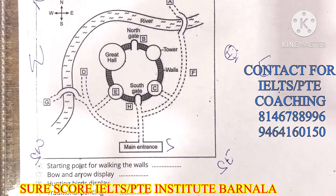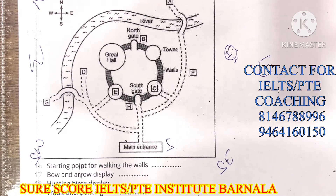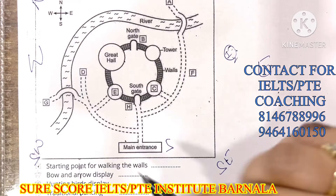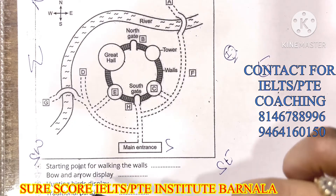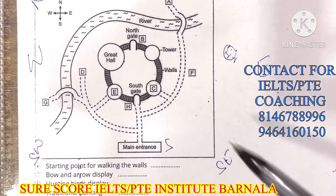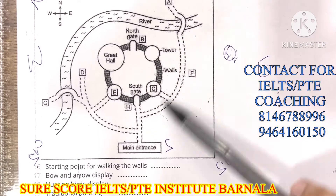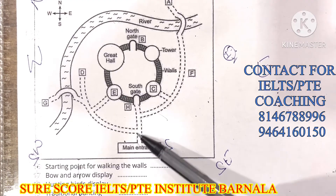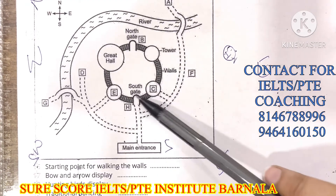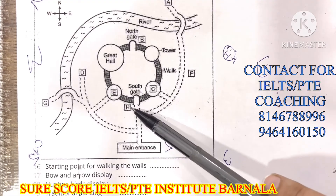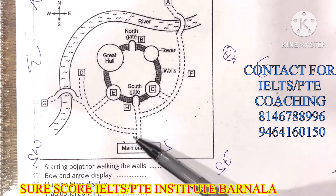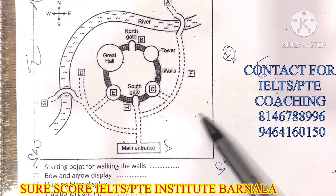We have to check questions 16 to 20. The key items to locate are: starting point, bow and arrow display, hunting birds, traditional dancing, and the shop. Quickly check and identify the main entrance on the map — we have found the main entrance here.